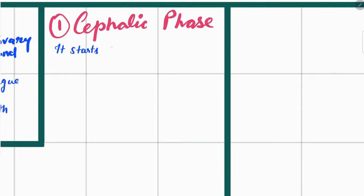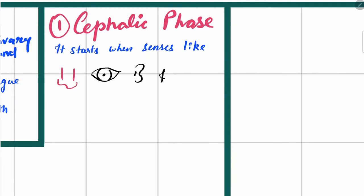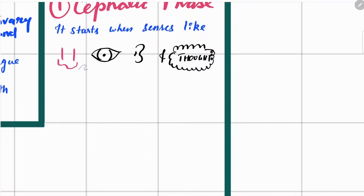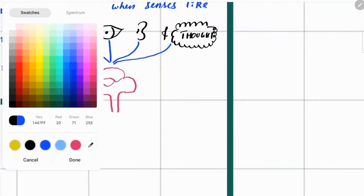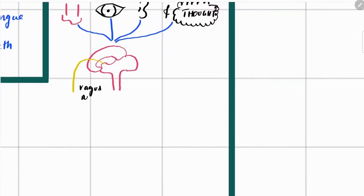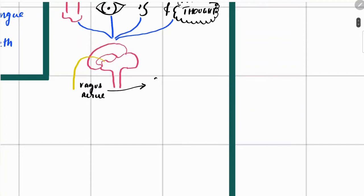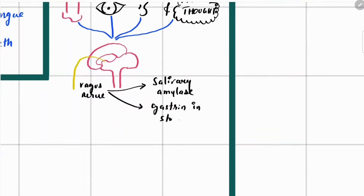The cephalic phase starts when your sensory organs — like eyes, nose, ear, and even your thought process — send signals to your nervous system. Your nervous system, through the vagus nerve, stimulates digestive organs like the stomach and small intestine. The brain is stimulated via the olfactory nerve, optic nerve, vestibulocochlear nerve, and thought process. The vagus nerve then stimulates the salivary gland to secrete salivary amylase, and also stimulates the stomach to secrete gastrin.